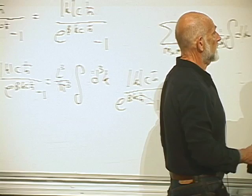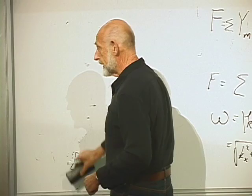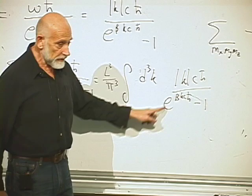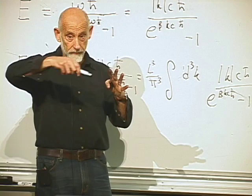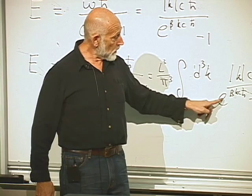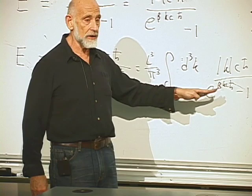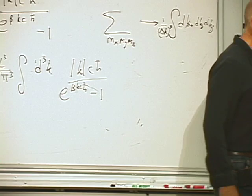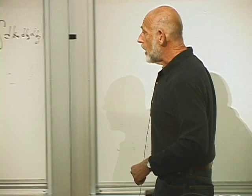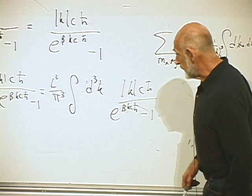Does this converge? Yes — when k gets large the denominator grows exponentially fast, so the integral is very convergent. The total energy in the box is finite. The energy is proportional to L-cubed, the volume, as expected for an extensive quantity. The remaining integral over u, integrated from 0 to infinity over all three components, is a definite number.